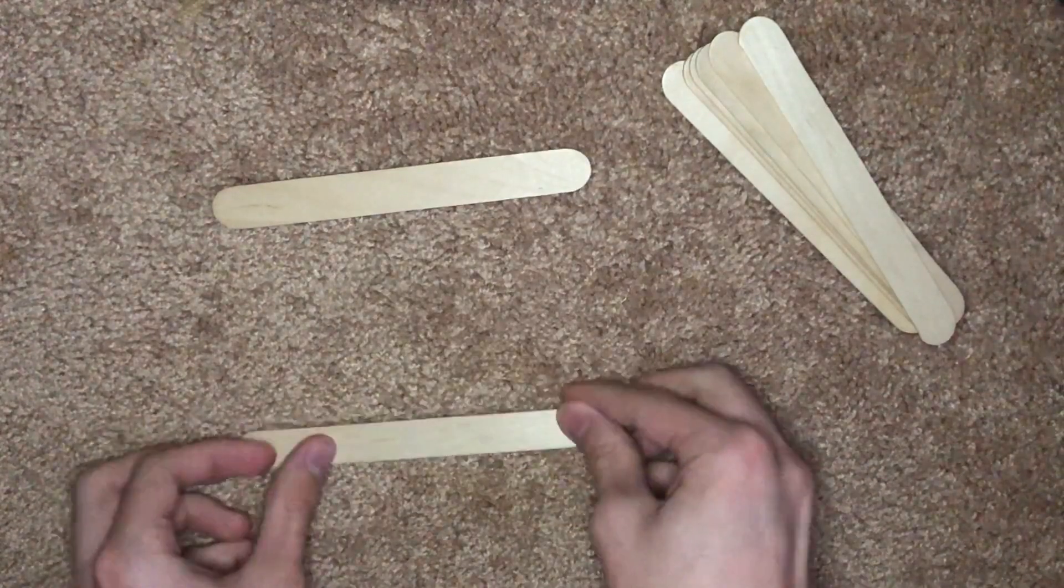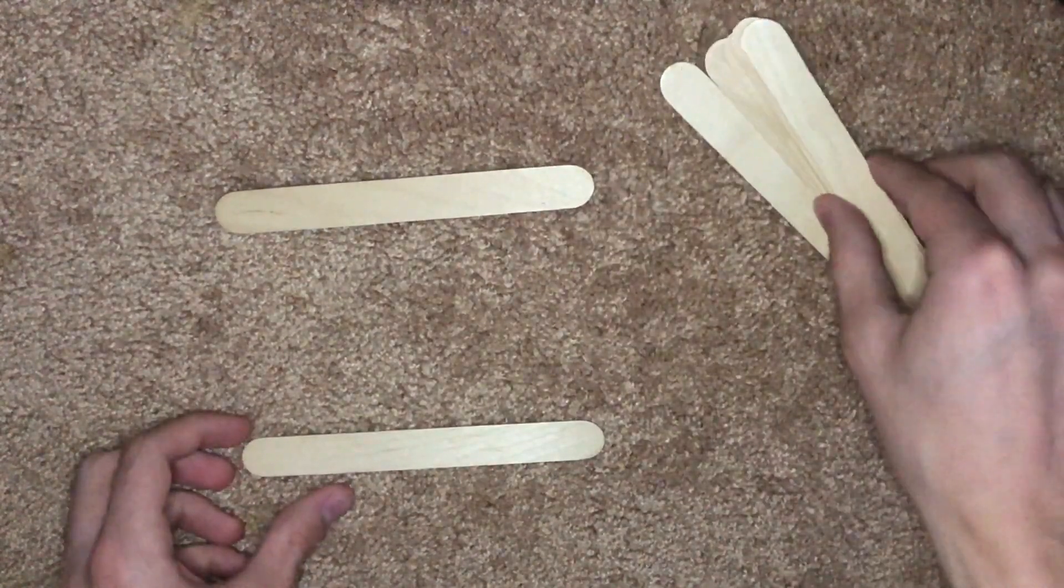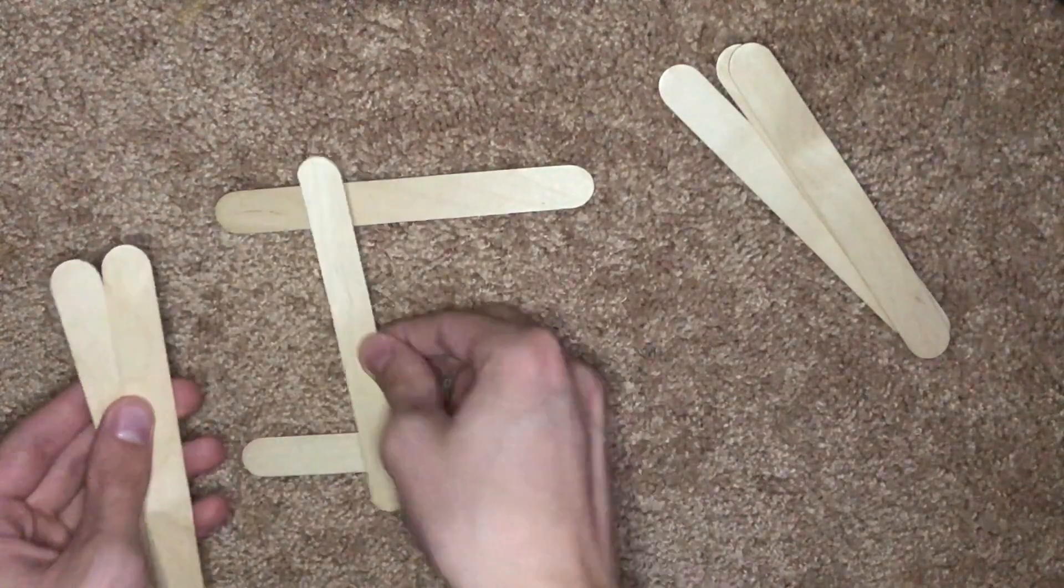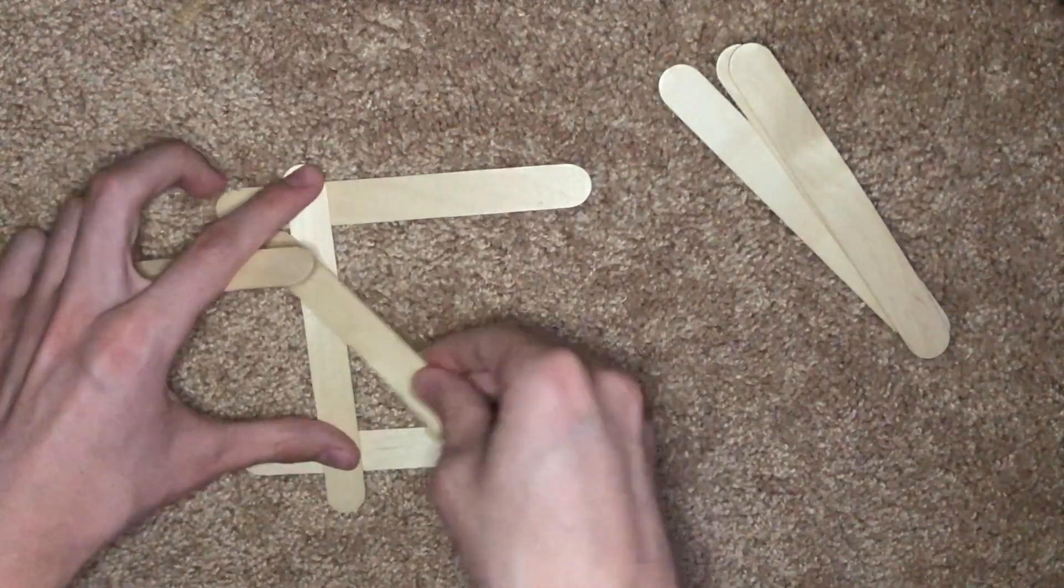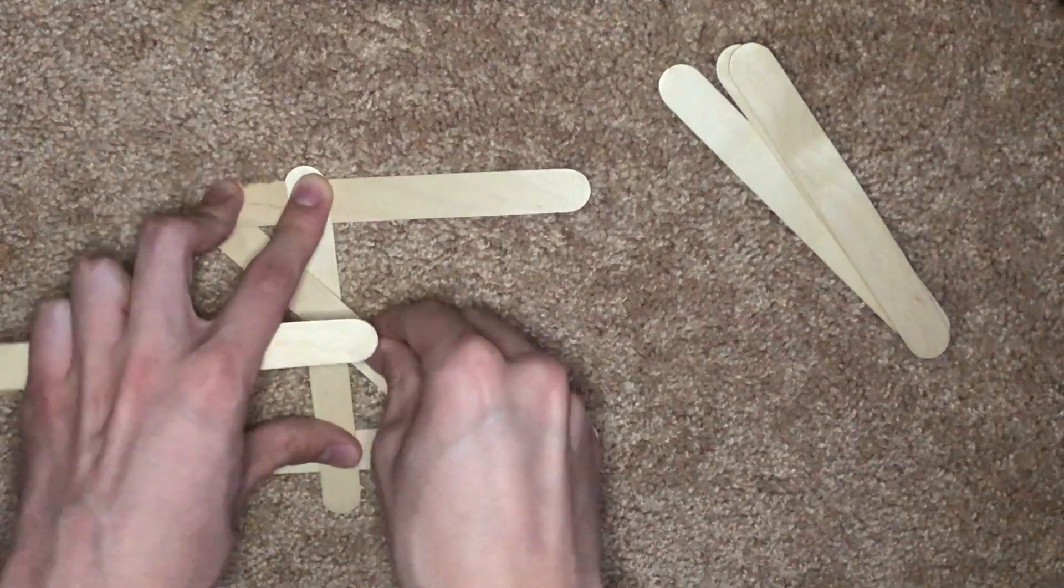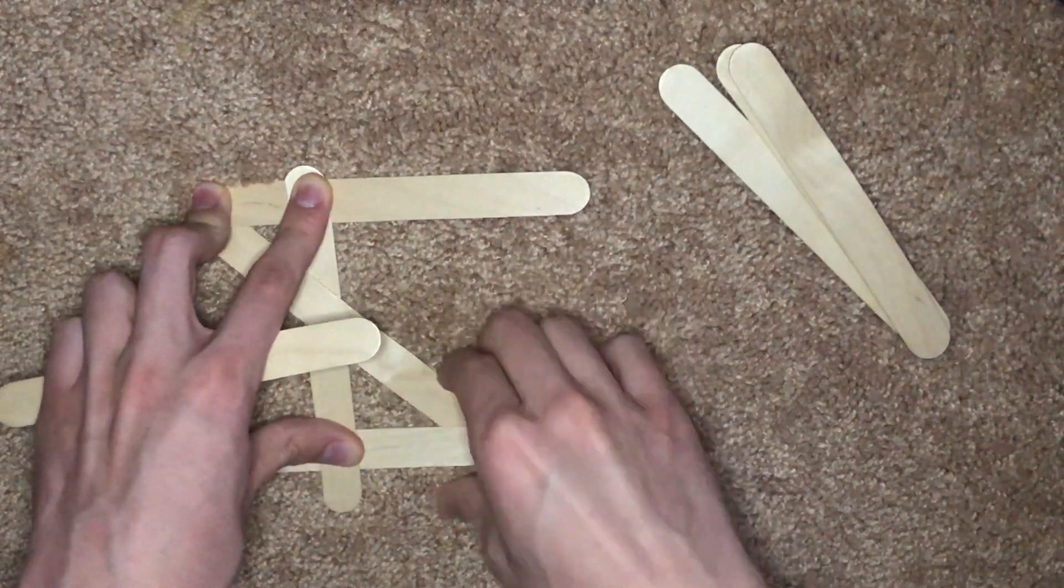So the first thing you do is take two sticks and make them parallel to each other. Then you place a stick that goes on top of both, and then one that goes under the corner, over.